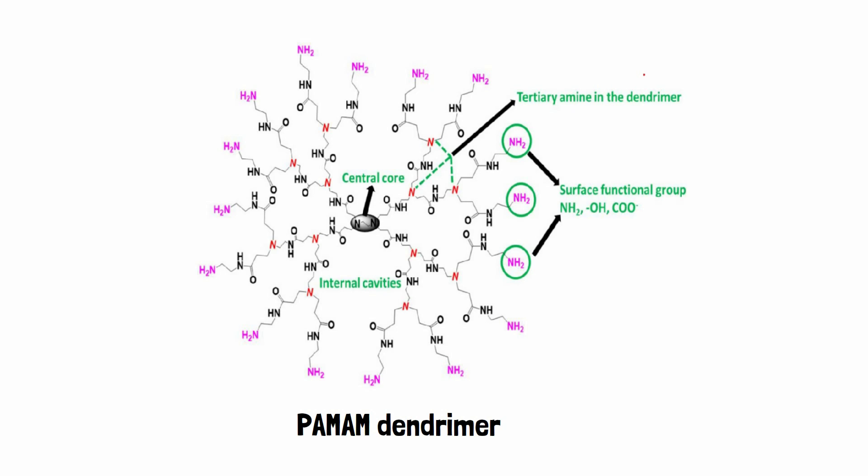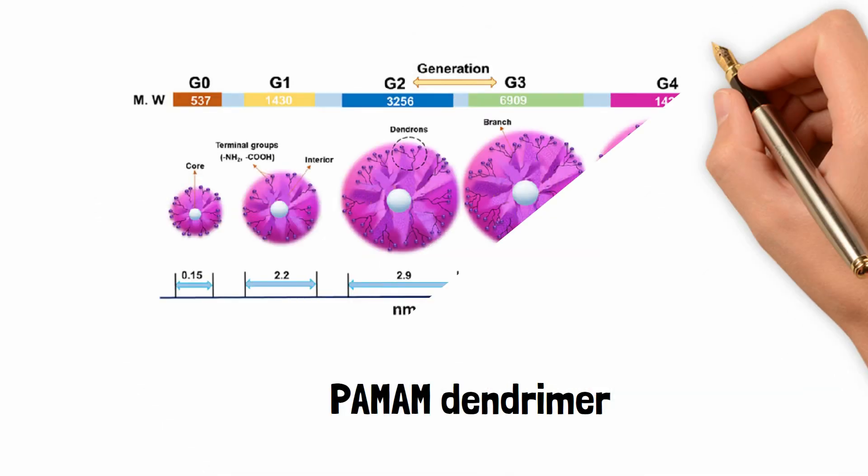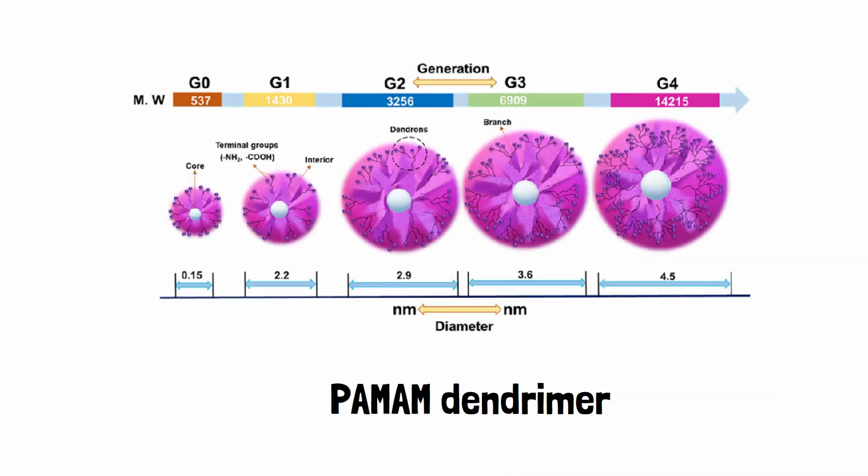PAMAM dendrimer can be distinguished based on the surface groups such as OH, NH2, and COOH. The number of terminal groups, molecular weight, and size increases for each generation of PAMAM dendrimer.